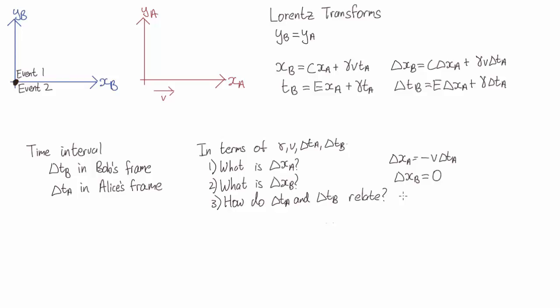Finally, how do delta ta and delta tb relate? So now these two events happen at the same place in Bob's reference frame. So now we have delta ta equals gamma delta tb.